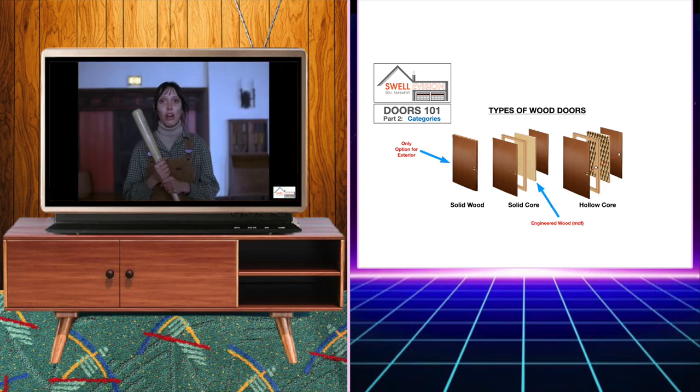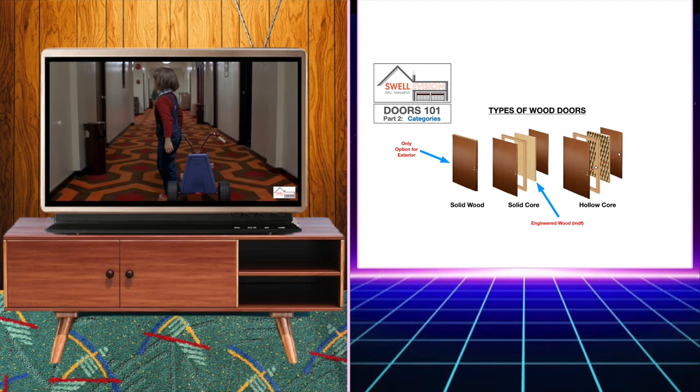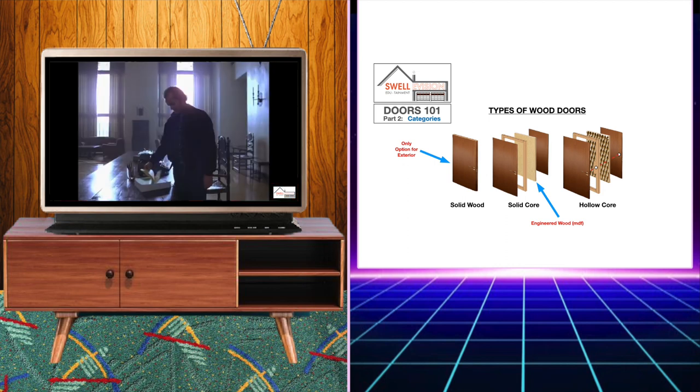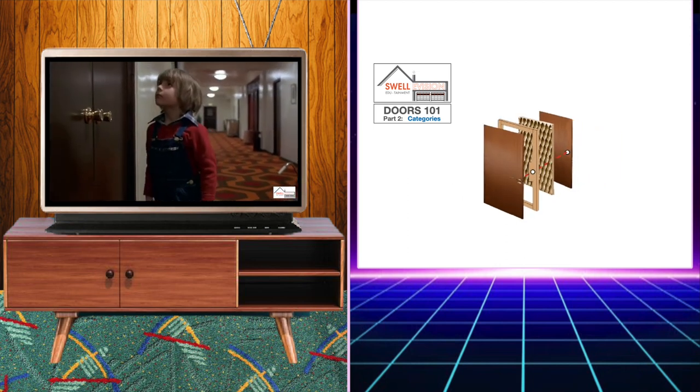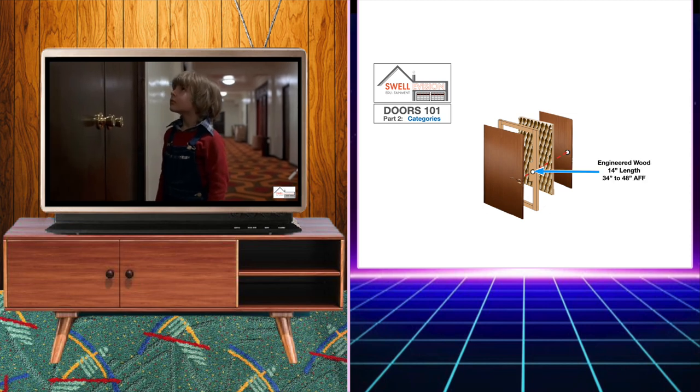Most interior doors are hollow core with the inside of the door made of paperboard or plastic. A hollow core door only has a 12 inch section of engineered wood installed inside of the door between the 34 and 48 inch range for placing the door handle.